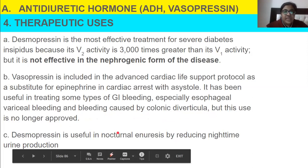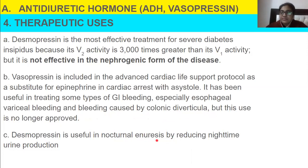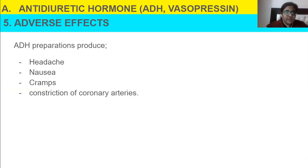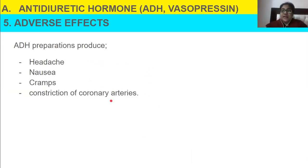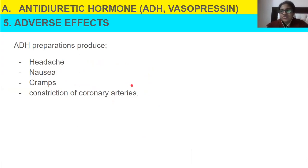Desmopressin is useful in nocturnal enuresis by reducing nighttime urine production. Nocturnal enuresis is urinating while sleeping at night. Adverse effects of ADH include headache, nausea, cramps, and constriction of coronary arteries. The more prominent adverse effects to note are headache, cramps, and coronary artery constriction — nausea and vomiting are nonspecific global symptoms.